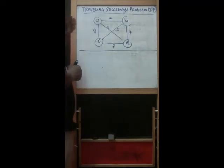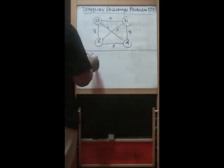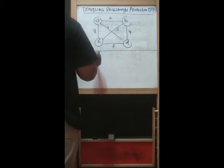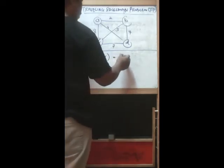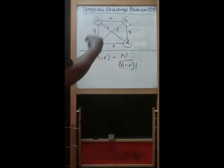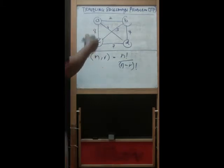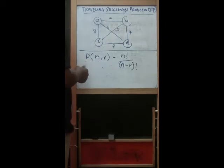Before we move on, basically this problem falls under combinatorial, in particular under permutation. The formula for permutation is N and R equal to N factorial over N minus R factorial. This is how many permutations for this problem.